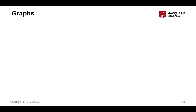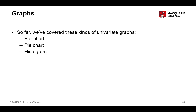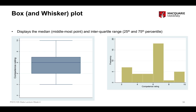As a side note on graphs, we've talked about bar charts, pie charts, and histograms. Bar charts and pie charts are for categorical variables, whereas histograms are for quantitative numeric variables. There is one more graph to cover — the box plot, also called a box and whisker plot. These are all univariate graphs, meaning they summarise one variable at a time.